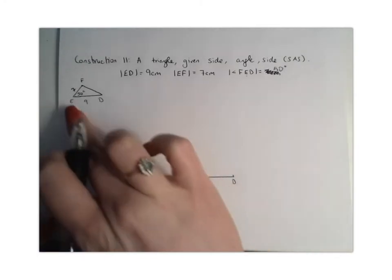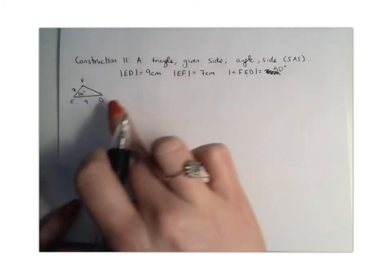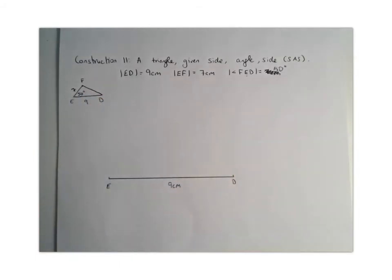The next thing you're going to do now is you're not going to measure your 7cm, we need to do our angle next. So you're going to get your protractor and place it at point E and measure around 50 degrees.